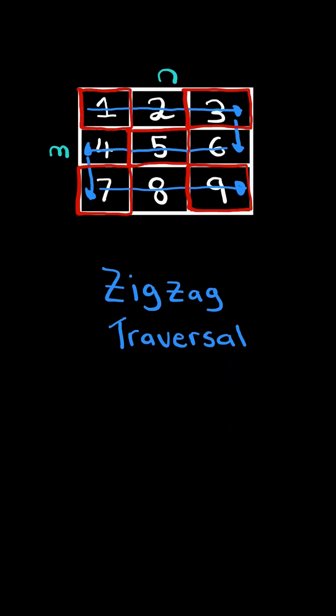Now consider the alternating cells in the zigzag traversal. Return a resulting list containing the alternating numbers in order of the traversal. We will solve this in O of m times n time.